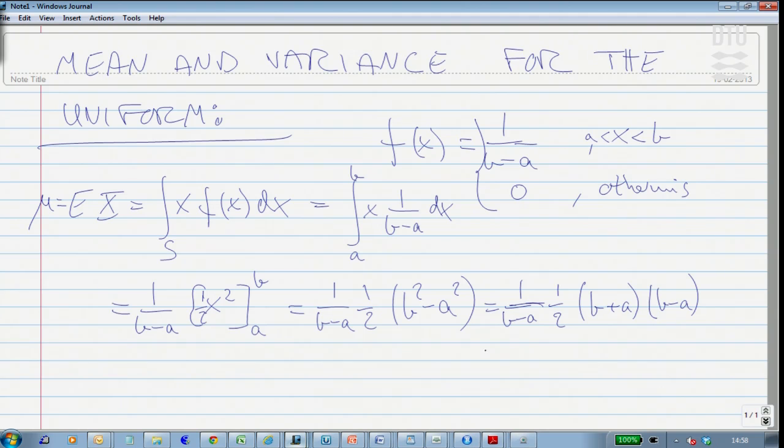So we can see that we are left with, this one cancels out with this one, and we are left with sort of the obvious, namely that the mean of a uniform distribution is right in the middle of the interval between a and b, the average of a and b.